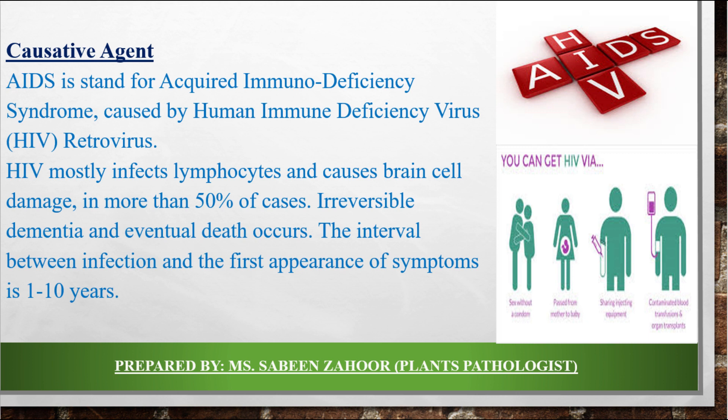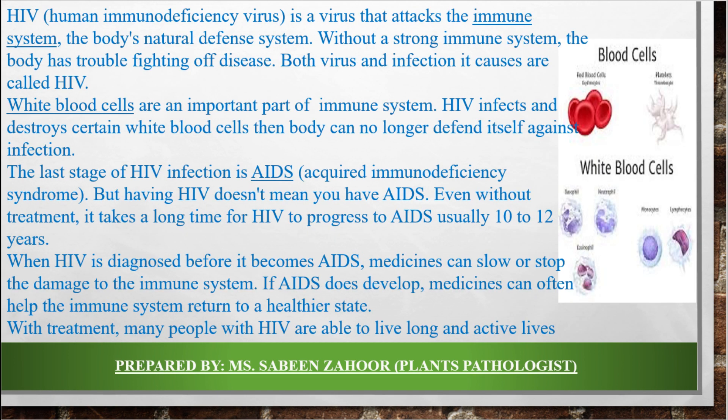Immunity response is produced by a variety of blood cells called WBCs, which are also called lymphocytes. HIV attacks the lymphocytes and uses the genetic material to produce more virus particles, which are released into the blood to attack more WBCs. This leads to destruction of the white blood corpuscles and reduces the body's defense against infections like pneumonia and some kinds of cancer.